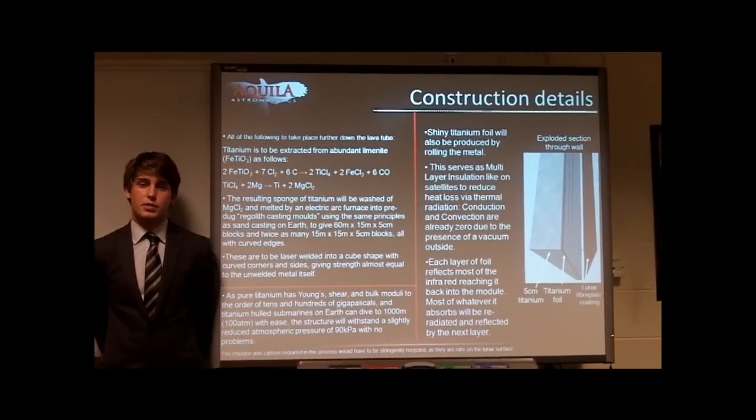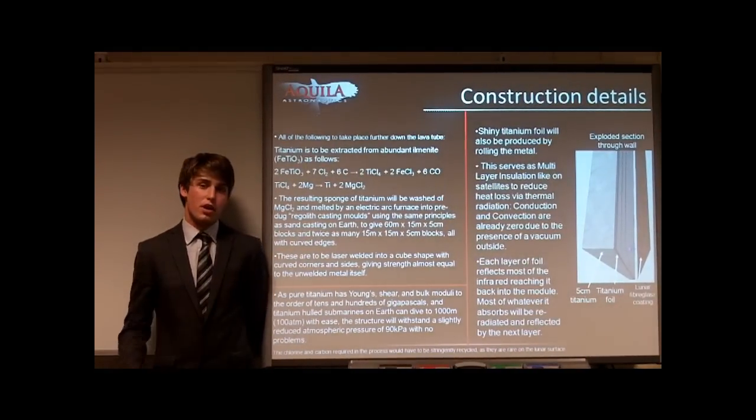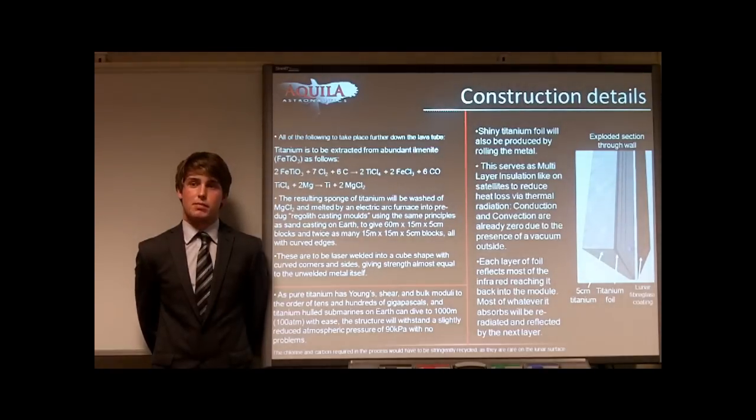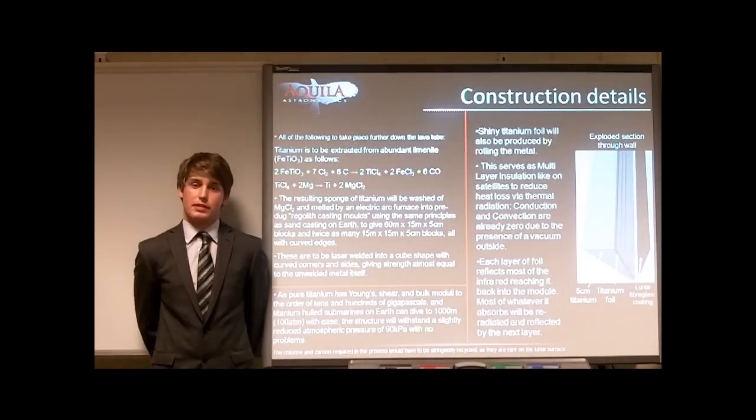In order to save cost, titanium should be produced from the abundant ilmenite found on the Moon, as per the equation shown. The resulting sponge should then be washed out of magnesium chloride and melted through an electric arc furnace. Titanium has been shown in submarines to withstand pressures of over 10 megapascals, which is plenty for our needs on the Moon.